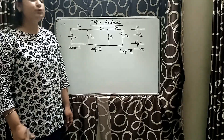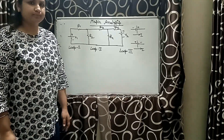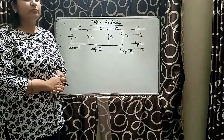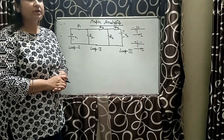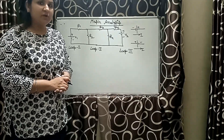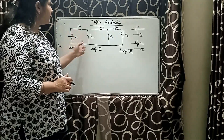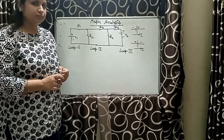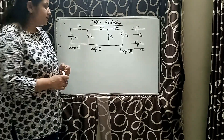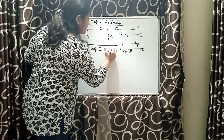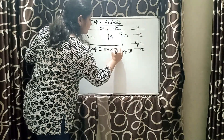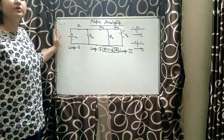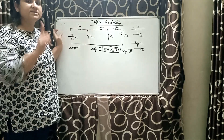Let us discuss mesh analysis. In mesh analysis we are supposed to use Kirchhoff's Voltage Law, which states that the total voltage in any closed loop is equal to zero, or that summation of V is equal to summation of IR. This is what we are supposed to do in the case of mesh analysis.